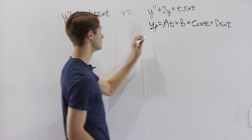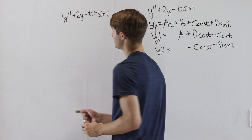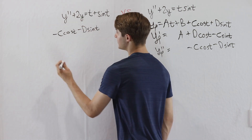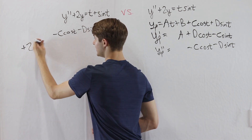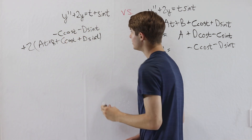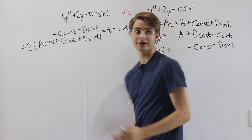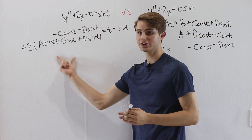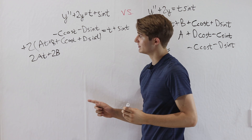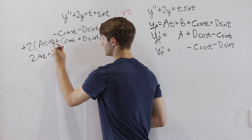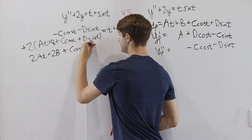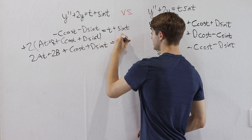We differentiate twice and plug into our equation. y double prime gives negative c cosine t minus d sine t. For 2y, we have plus 2 times (at plus b plus c cosine t plus d sine t), all equal to t plus sine t. Expanding: 2at plus 2b, and the cosines give 2c cosine t minus c cosine t equals c cosine t, while 2d sine t minus d sine t equals d sine t. That equals t plus sine t.